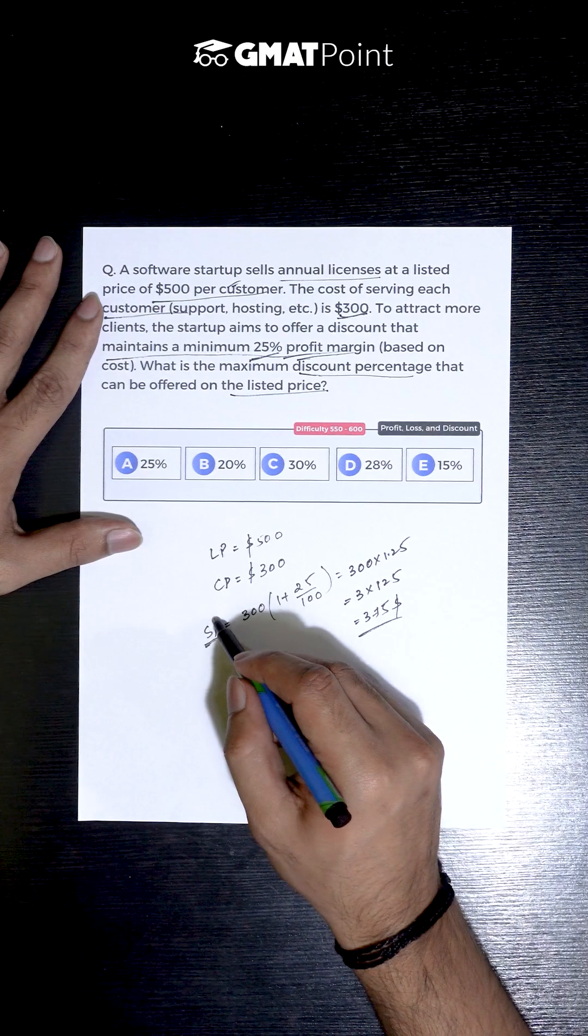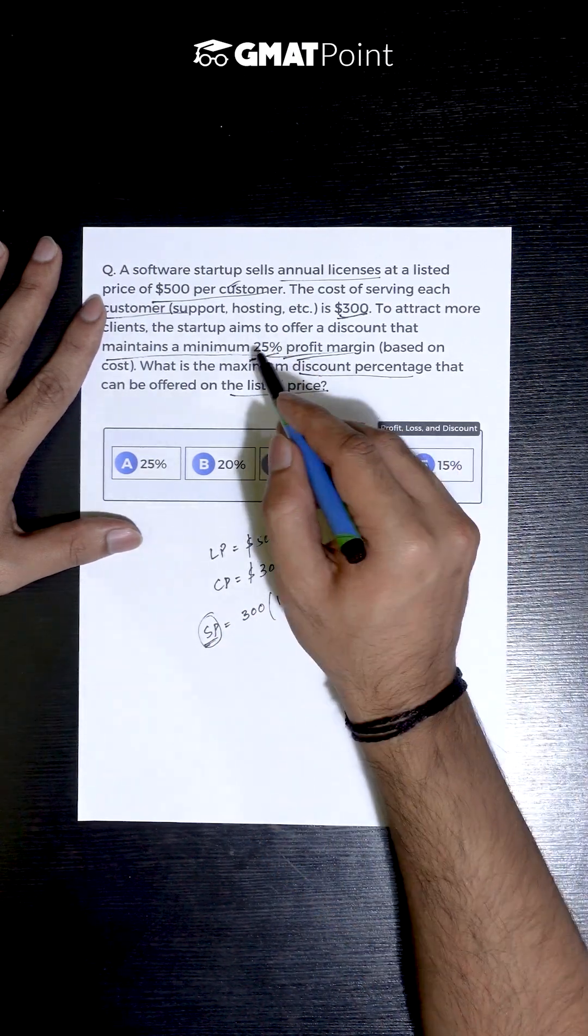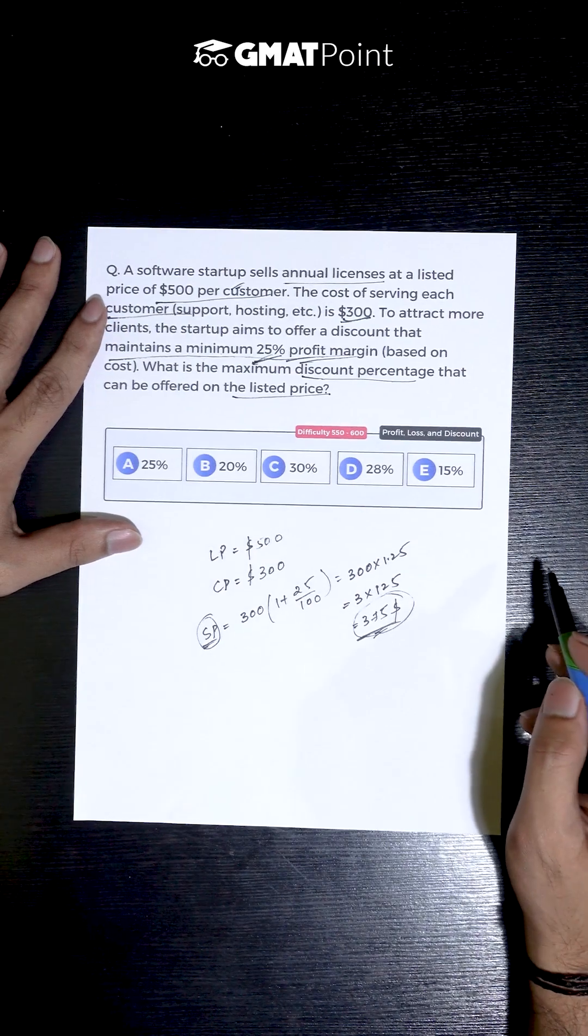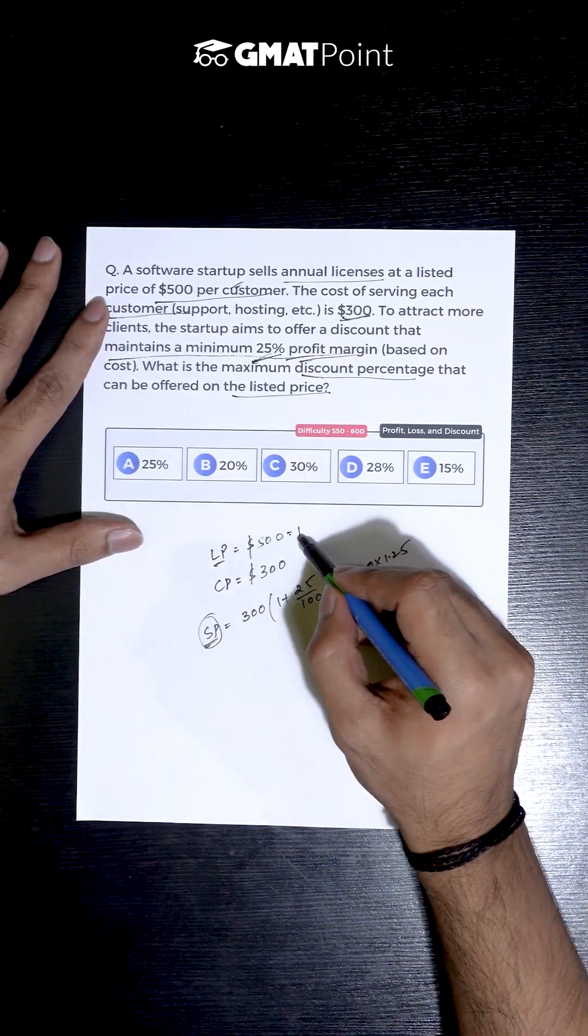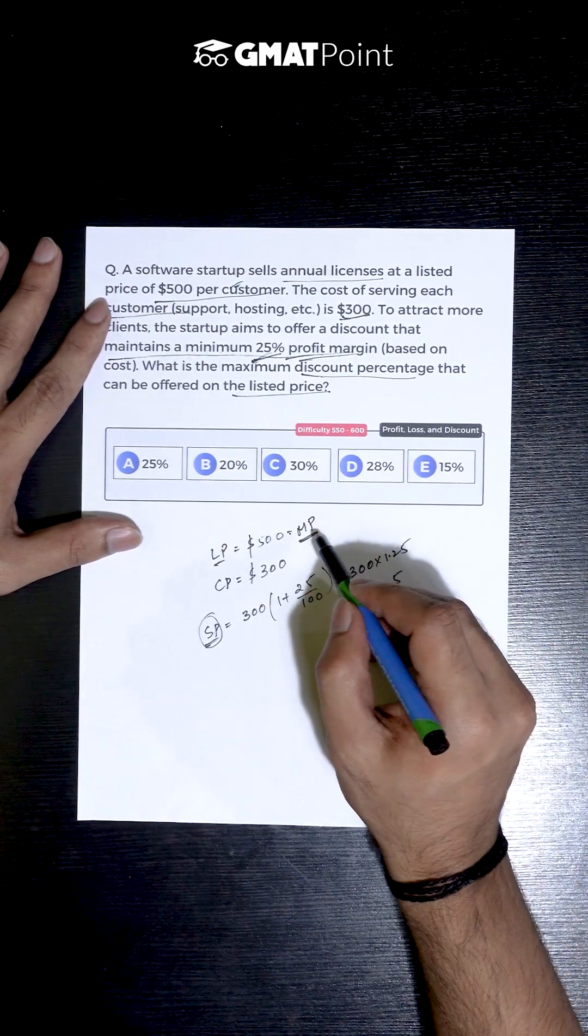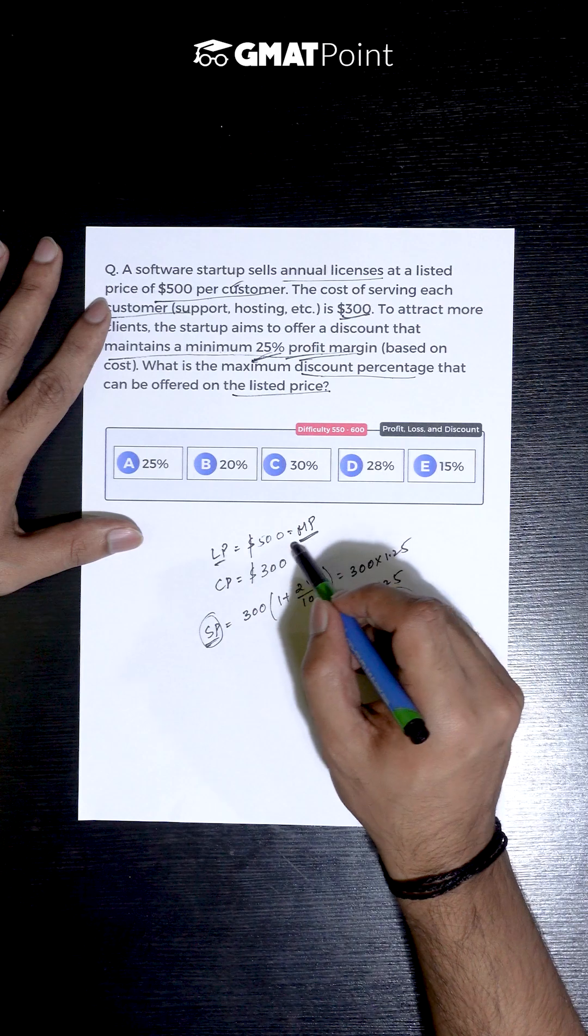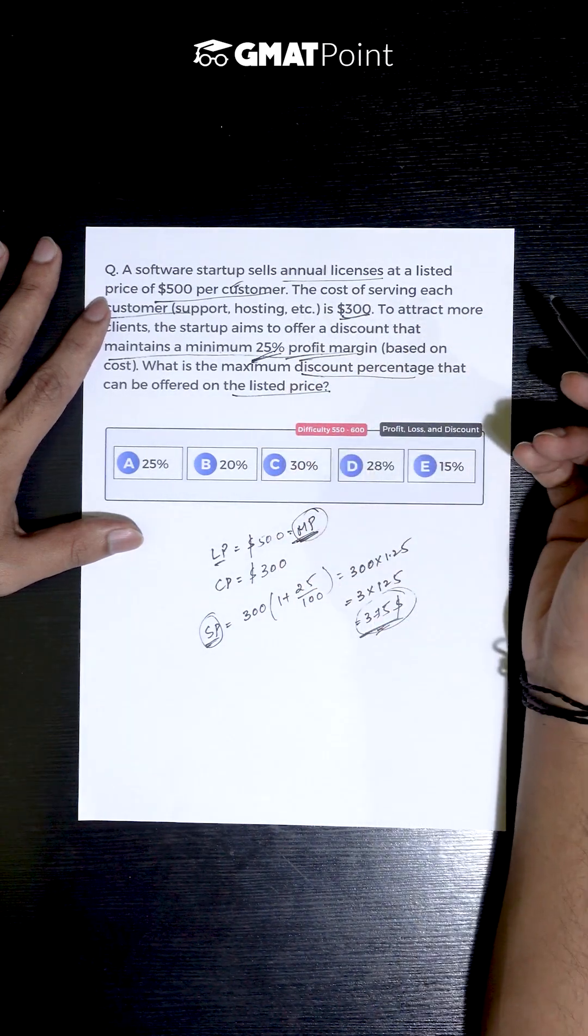The least selling price that it can go up to is $375, and this is possible when the profit is 25%. We know that listed price is given to be $500, which is nothing but we can treat this as market price. A discount is given on this market price such that a profit of minimum 25% is being made.